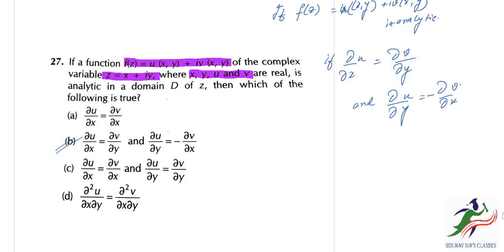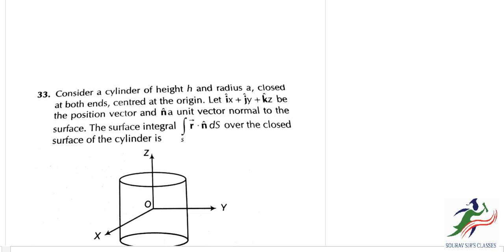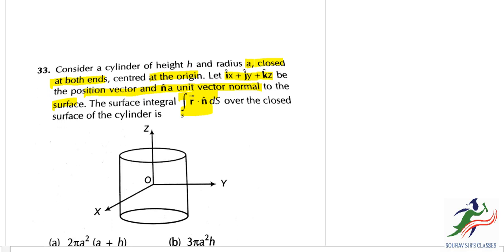Consider a cylinder of height h and radius a, closed at both ends, centered at the origin. Let i·x + j·y + k·z be the position vector r, and n a unit vector normal to the surface. We need to evaluate the surface integral of r·n over the closed surface of the cylinder.